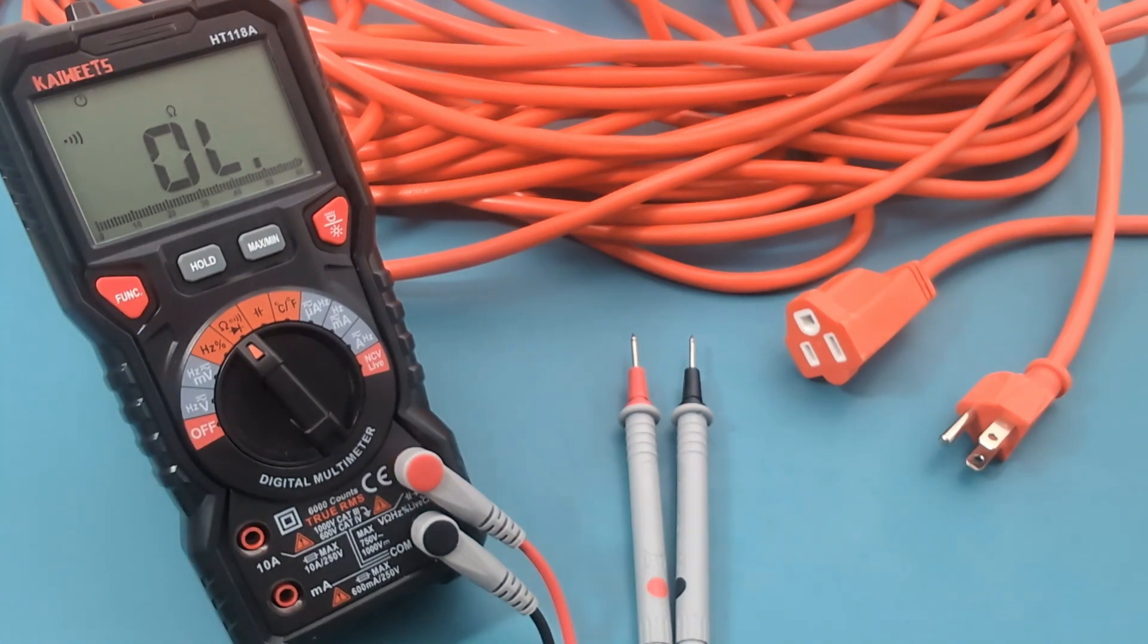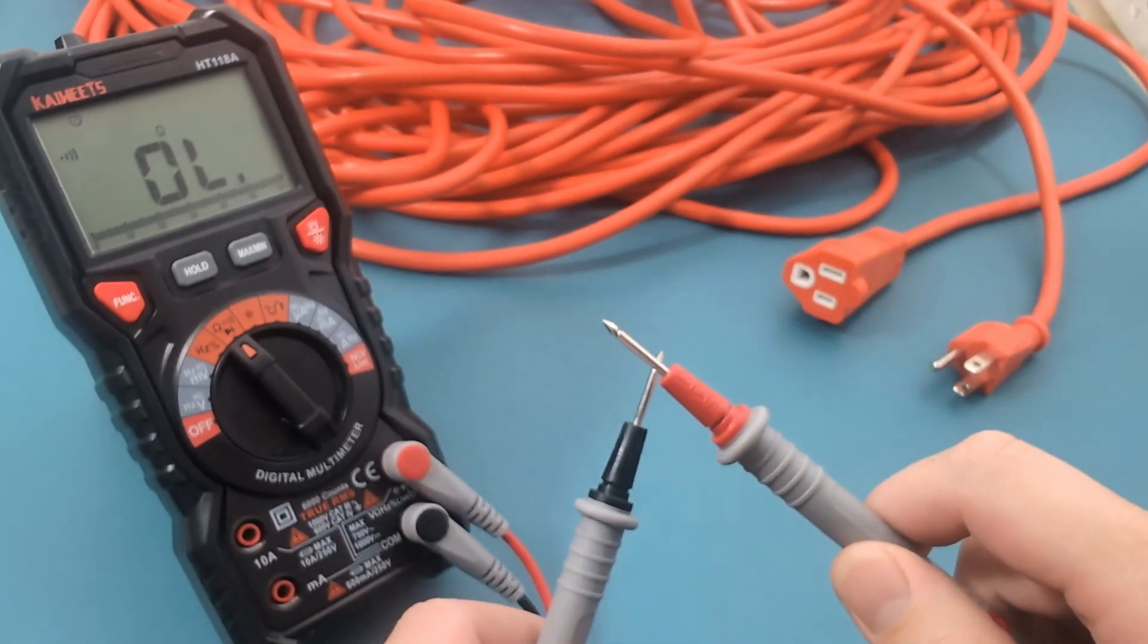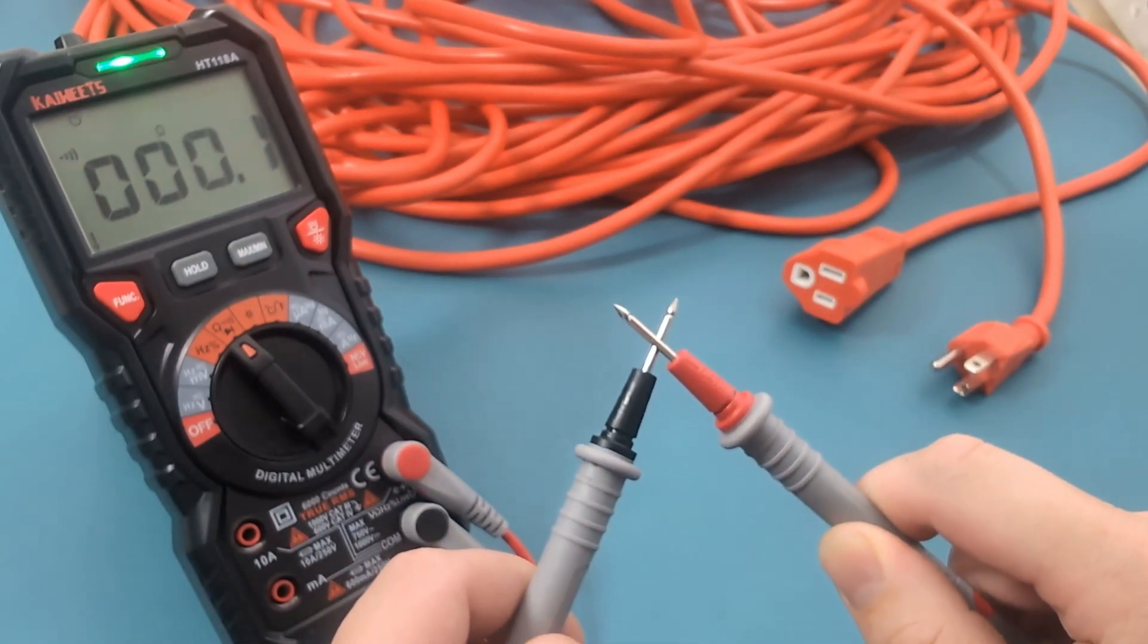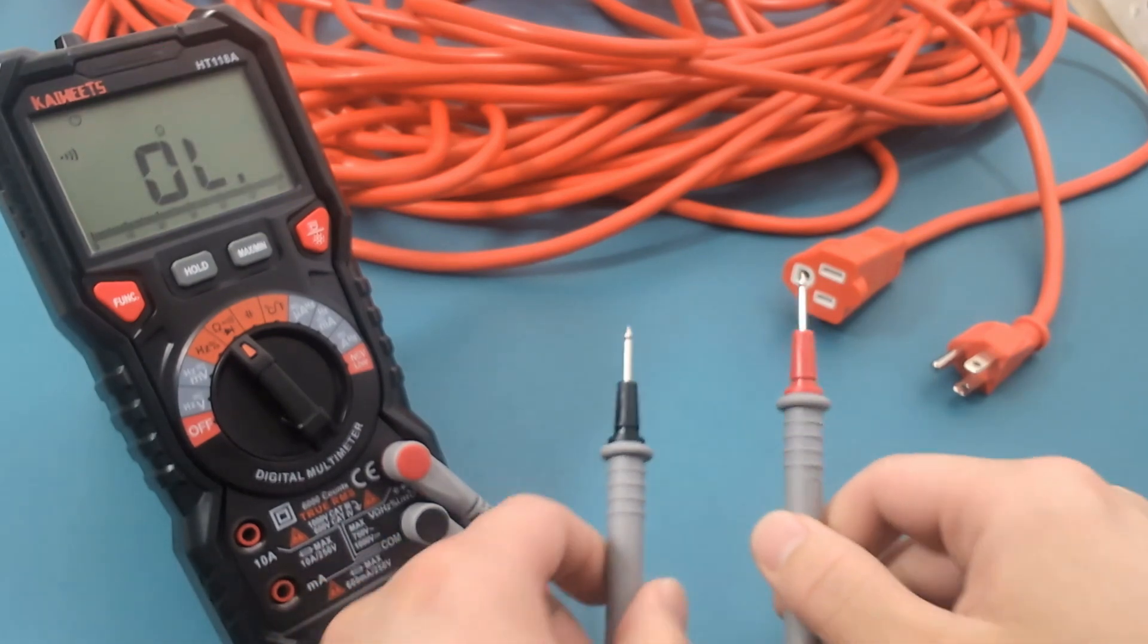If your multimeter doesn't have this feature, set it to the ohm setting. To make sure the multimeter is working correctly, touch the leads together. You should hear a beep, which indicates that there is continuity. You should see a reading of approximately 0.2 ohms, confirming that the multimeter and leads are working correctly.